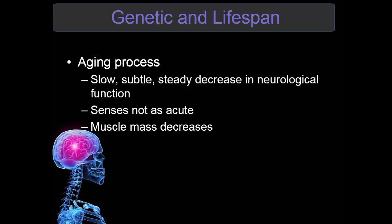Looking at the aging process, slow, subtle, and steady decreases in neurologic function occur with aging. These include memory loss, subtle loss of coordination, slower or diminished reflexes. Their senses are usually not as acute, and their muscle mass will decrease.